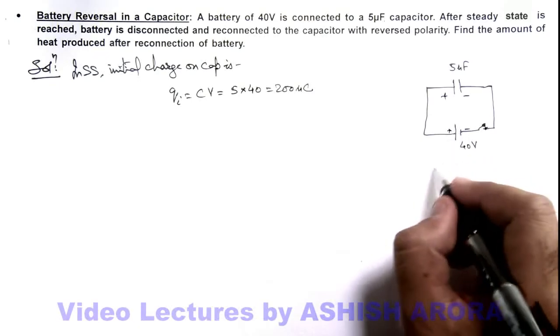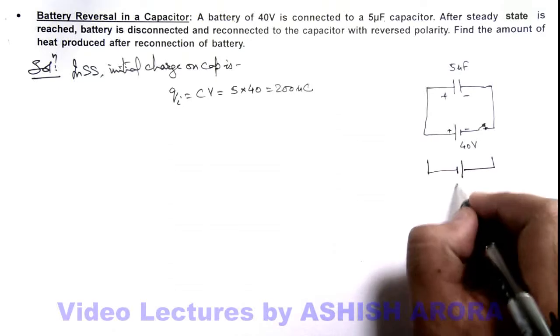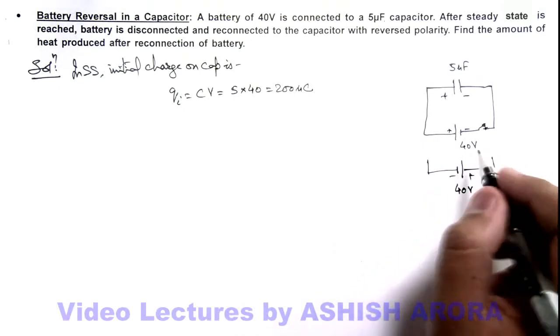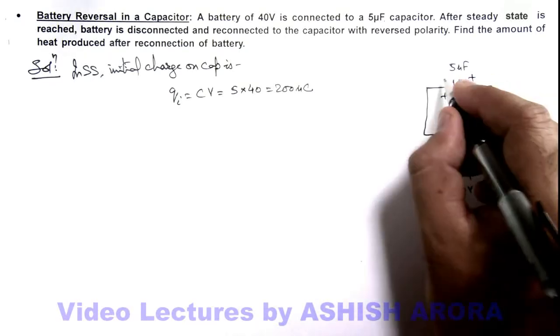Now, we disconnect the battery and we connect it with reverse polarity to the same capacitor. The battery is also same. So in this situation in final state again we can say the charge on capacitor will be CV, but this will be positive and this will be negative.